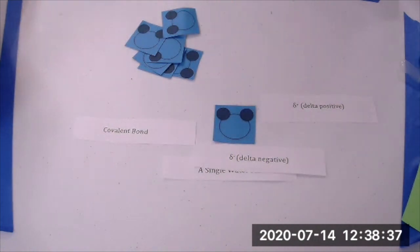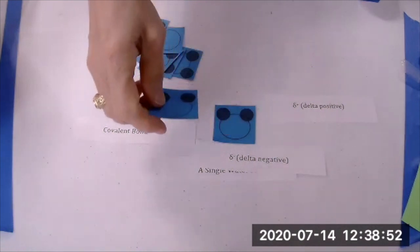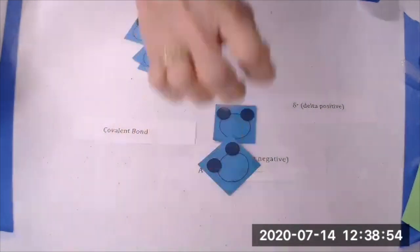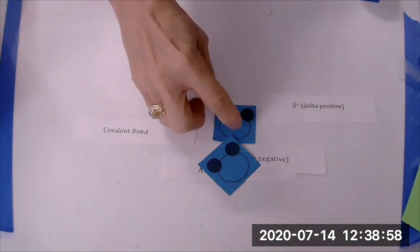The relationship between water molecules is affected. Two or more molecules are attracted to one another in a very specific way. So the negatively charged oxygen end is attracted to a positively charged hydrogen end, and this is called a hydrogen bond.